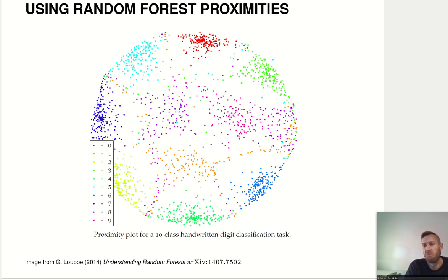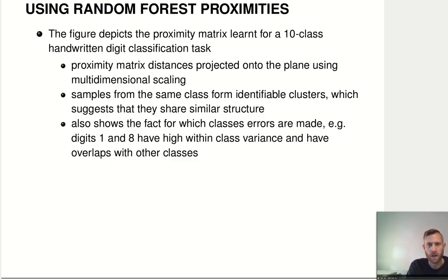even though the input data here are actually 28 by 28 pixel grayscale images. So, it's a fairly high dimensional feature space. Well, 28 squared, so almost 900 features. But here we can see there is a nice structure, even if we project these random forest proximities down into a two dimensional space.